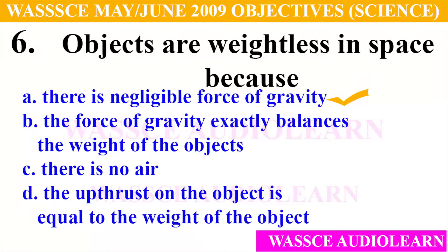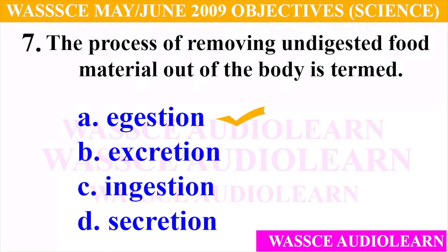Question 6: Objects are weightless in space because — A. There is negligible force of gravity, B. The force of gravity exactly balances the weight of the object, C. There is no air, D. The thrust on the object is equal to the weight of the object. And the answer for number 6 is A, there is negligible force of gravity.